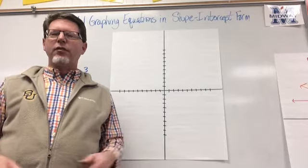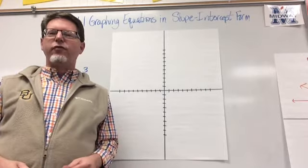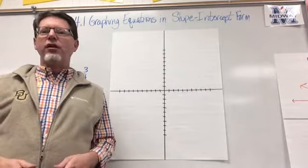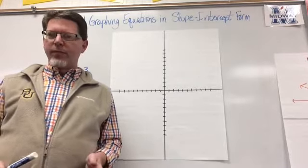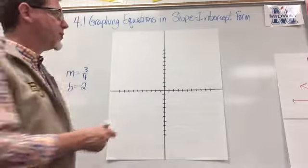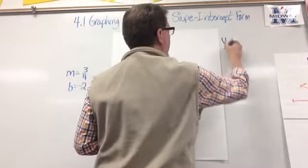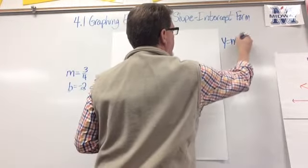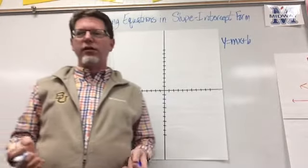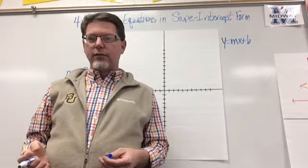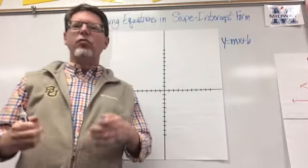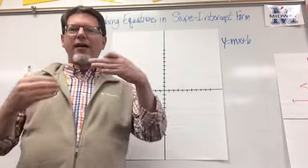Hello students, today we're going to look at section 4.1, which is graphing equations in slope-intercept form. You probably remember that slope-intercept form is y equals mx plus b, where m is the slope and b is the y-intercept. Hopefully that's solid. We're going to look at how to take an equation in slope-intercept form and graph it.